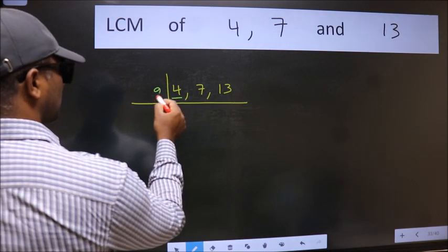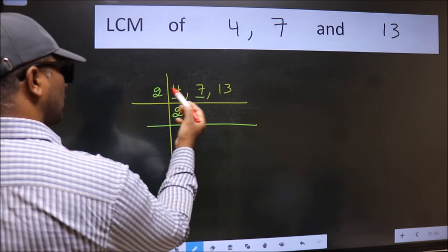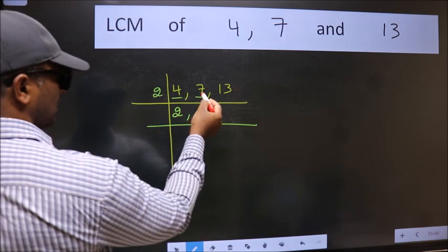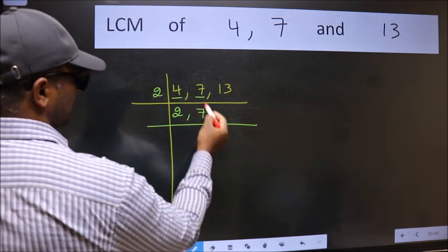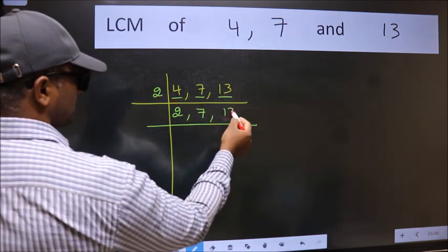4 equals 2 times 2. The other numbers 7 and 13 are not divisible by 2, so we write them down as they are.